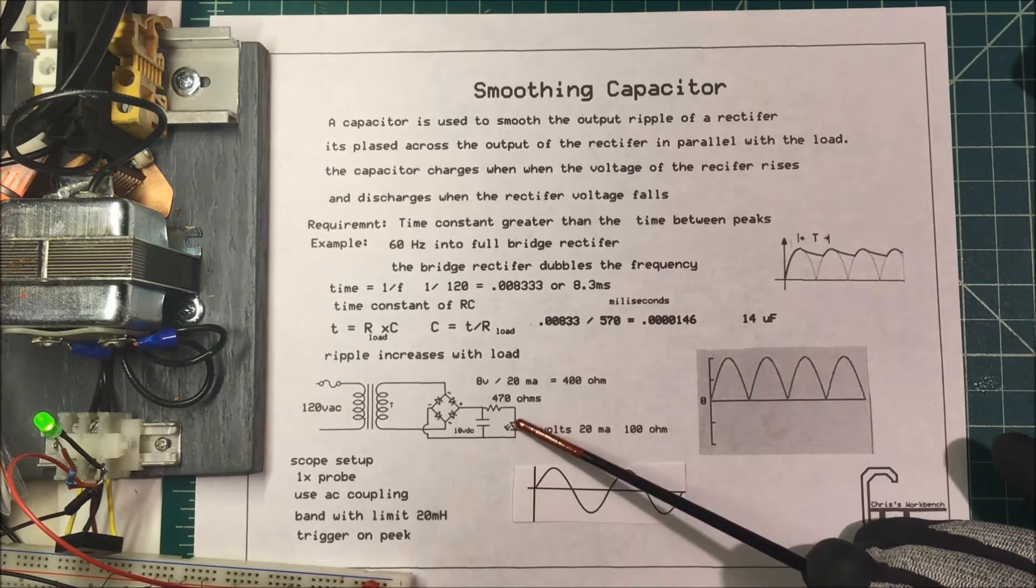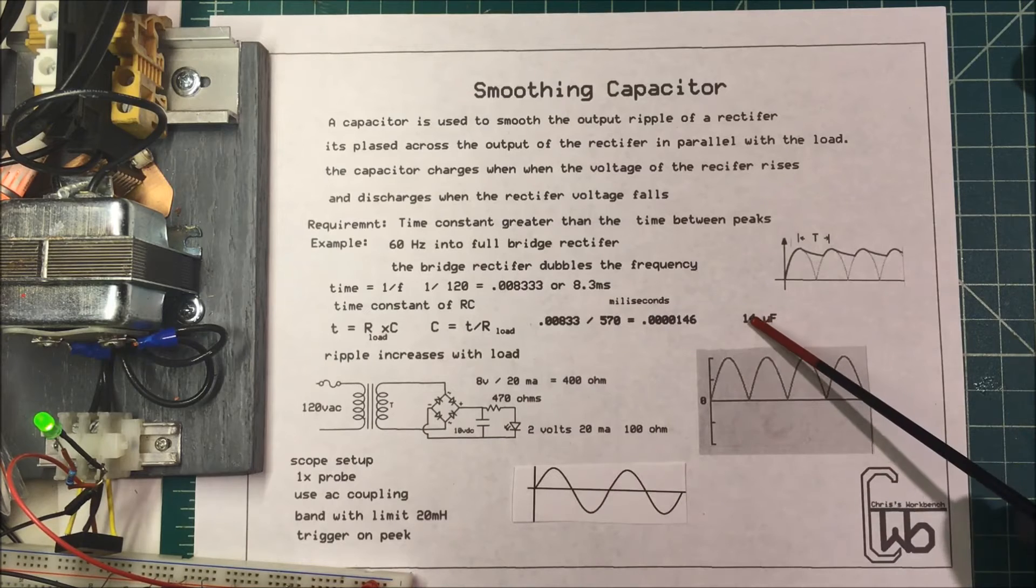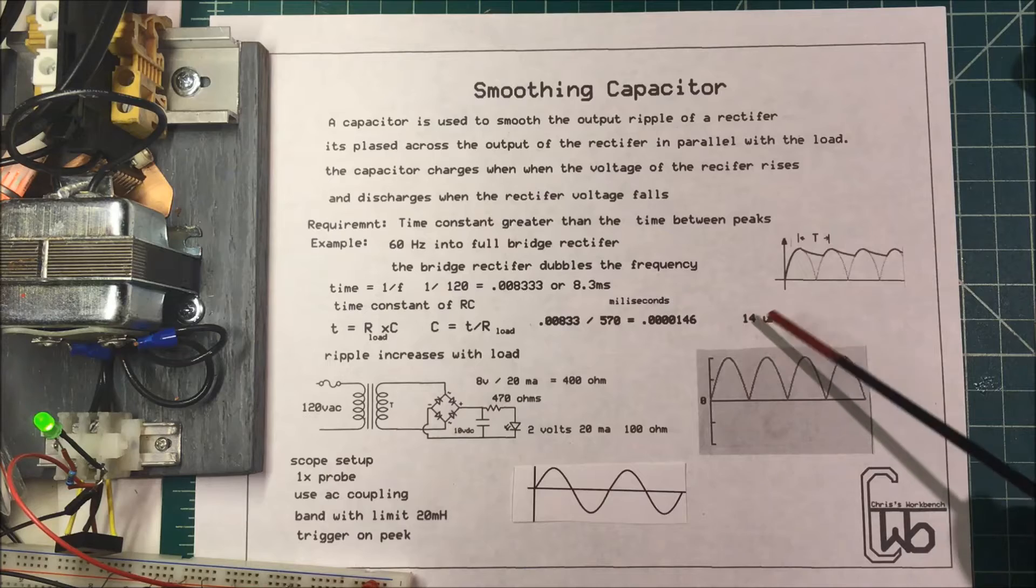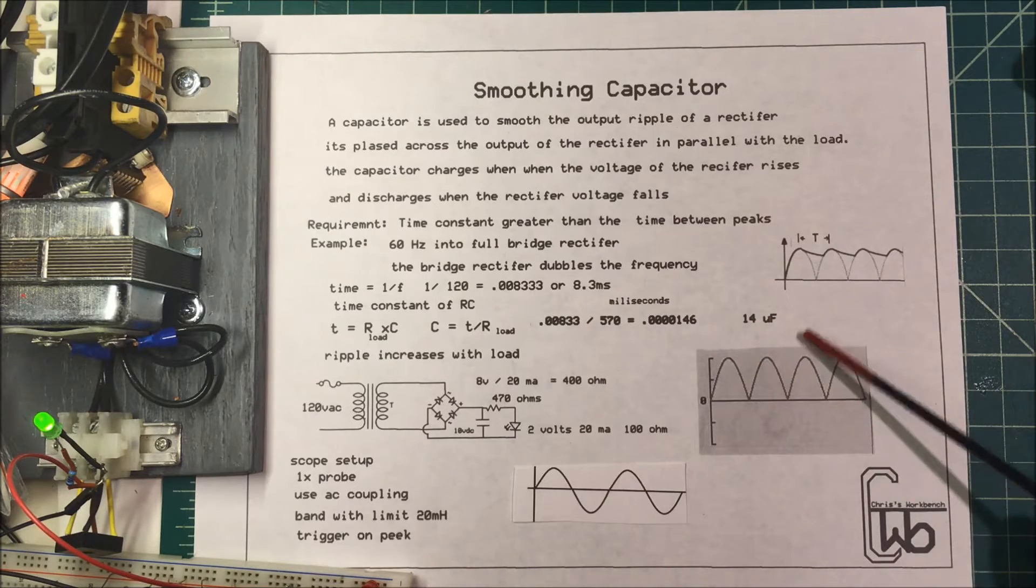As the load increases, the resistance decreases and I'm going to need a bigger capacitor to smooth this pulse out.